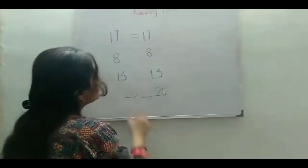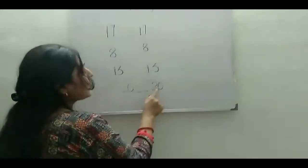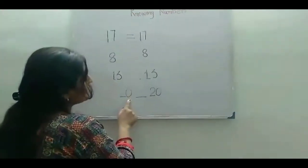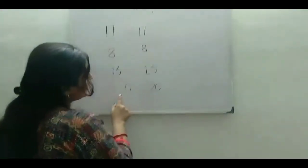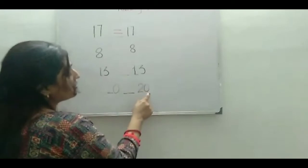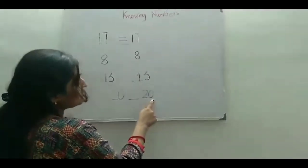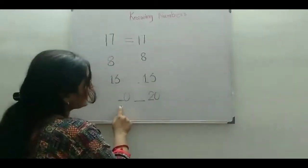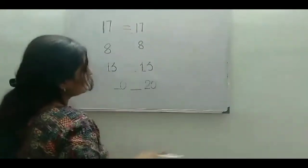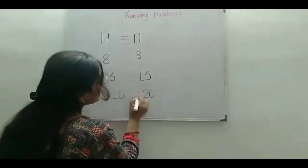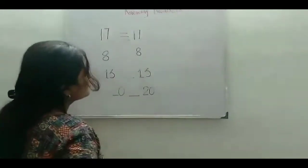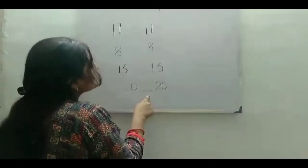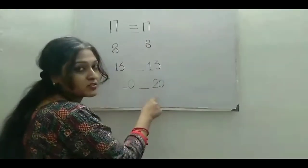Here, 20 — the ones number is 0 and the tens number is 2. Here also the ones number is 0 and the tens number is 2. So, 20 is equal to 20, and here also this sign. This equal to sign should mark the equal numbers.